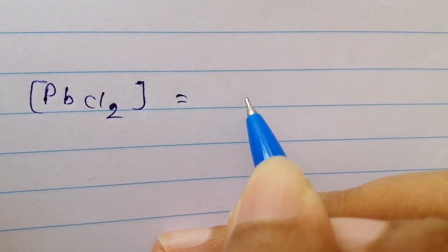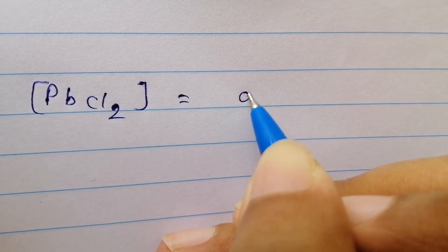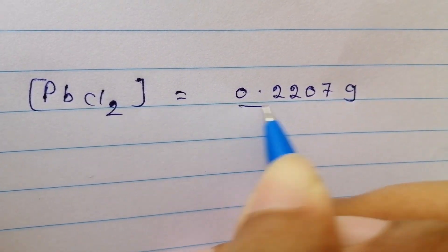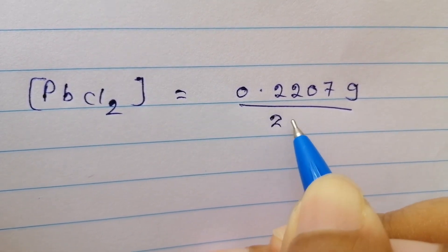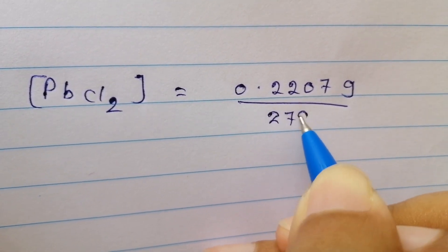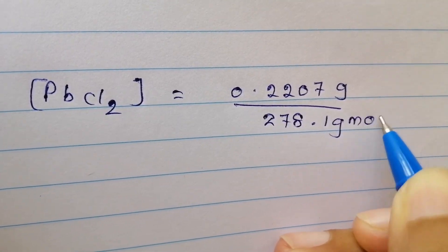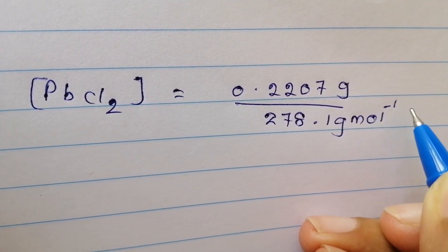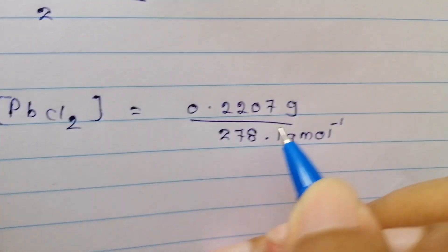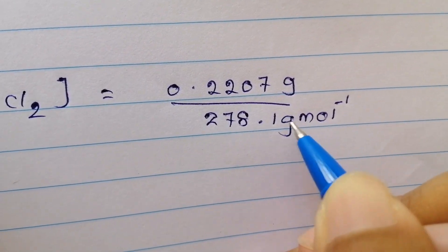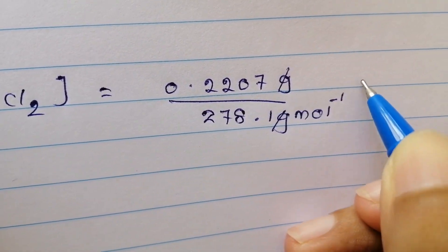For the lead chloride problem, we need the concentration in moles per liter. We can also convert the units to get the molar concentration of lead chloride.